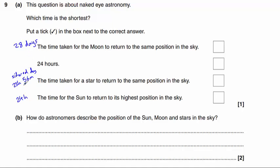So the correct answer here, which time is the shortest? It is the sidereal day. It's the time taken for a star to return to the same position in the sky.